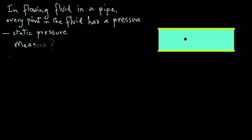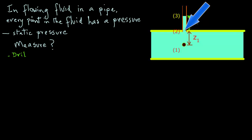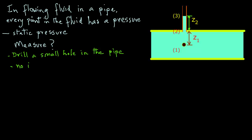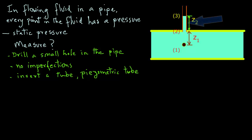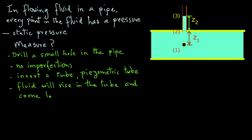To measure static pressure, the steps involve first drilling a small hole in the pipe and making sure that there are no burrs or imperfections where the hole is drilled, so it does not cause any disturbance to the fluid flow. Then we attach a small tube often called a piezometric tube. The fluid flowing in the pipe will move into the tube and rise to a certain height until it comes to rest.